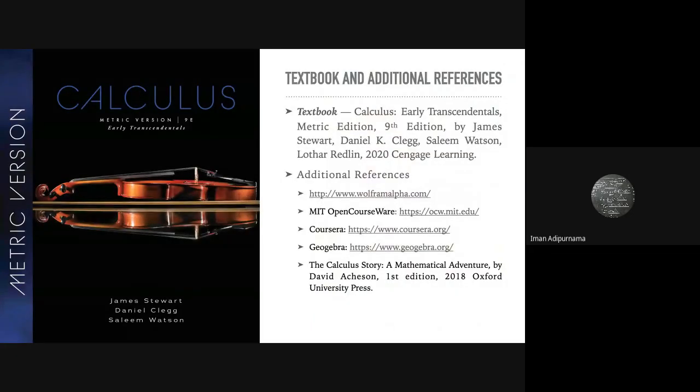If you want to find the textbook, this is the cover. This is the ninth edition — the key point is 'Early Transcendentals.' There will be a lot of versions, but I will be using this one. If you find the eighth or seventh edition, that's still okay. The difference between the ninth and previous editions is just in the order — some chapters. I prefer the ninth because it's more understandable and easy to follow.